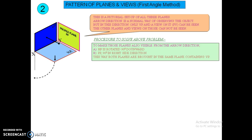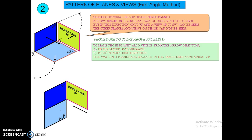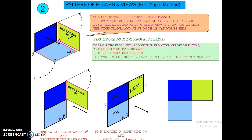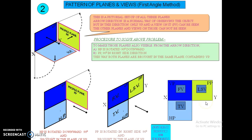We are rotating HP in the downward direction 90 degrees, and also the profile plane to the right side direction 90 degrees. The observer can then see VP and HP, and by rotating to the right side direction, we can also see the things in the profile plane. After that, we get this view with VP, PP, and HP. In VP we get the front view, in HP we can see the top view, and in PP we get the side view. This is the actual pattern of planes and views in orthographic projections.